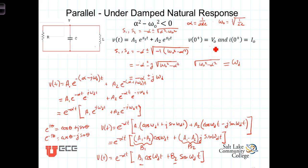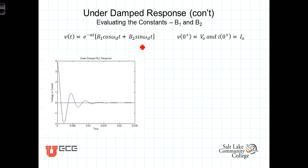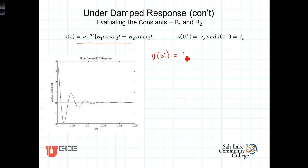The initial voltage is V naught and the initial inductor current is I naught. To evaluate B1 and B2 we need two equations. The first equation comes from evaluating V at t equals zero plus: e to the minus alpha times zero is one, cosine of zero is one, and sine of zero is zero. So the first equation is simply B1 equals V naught, the initial voltage on the capacitor.